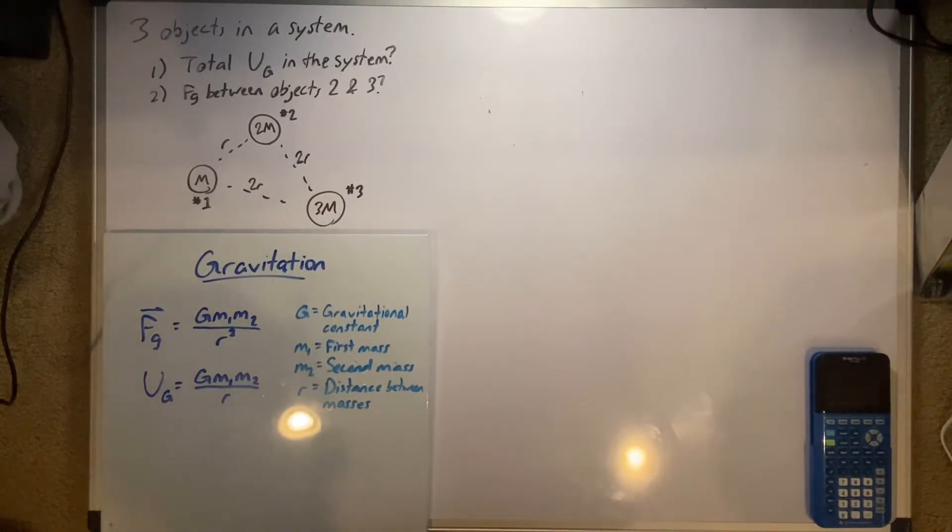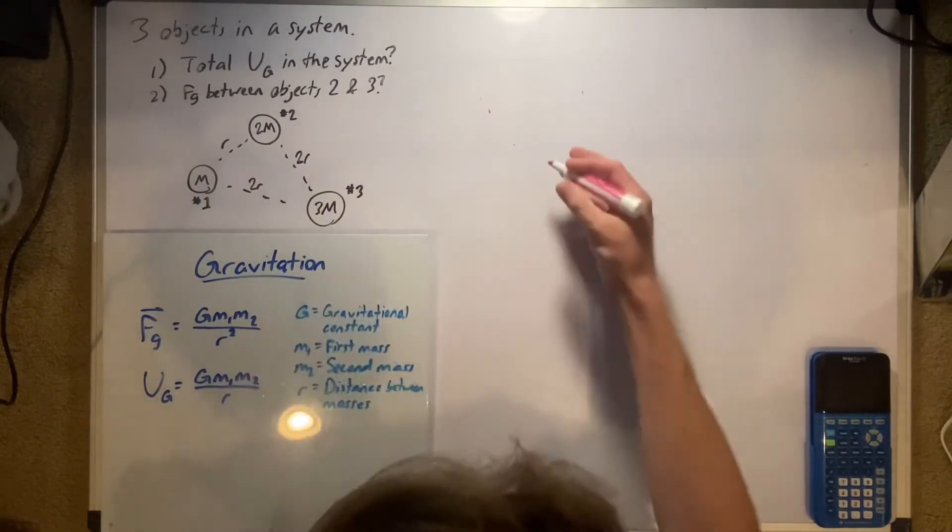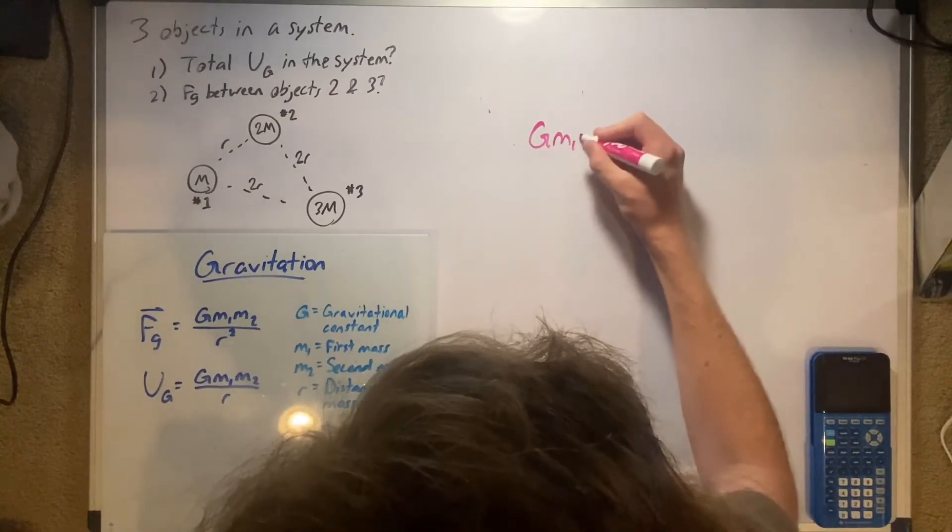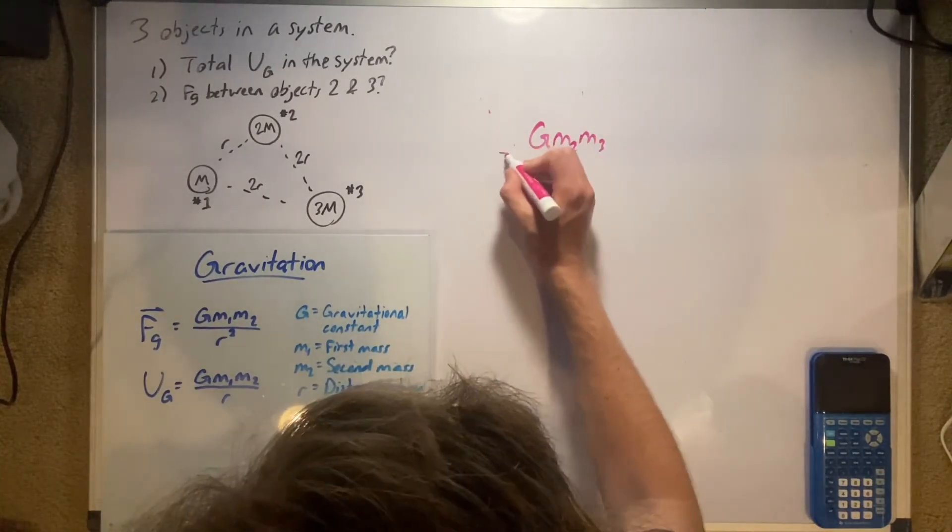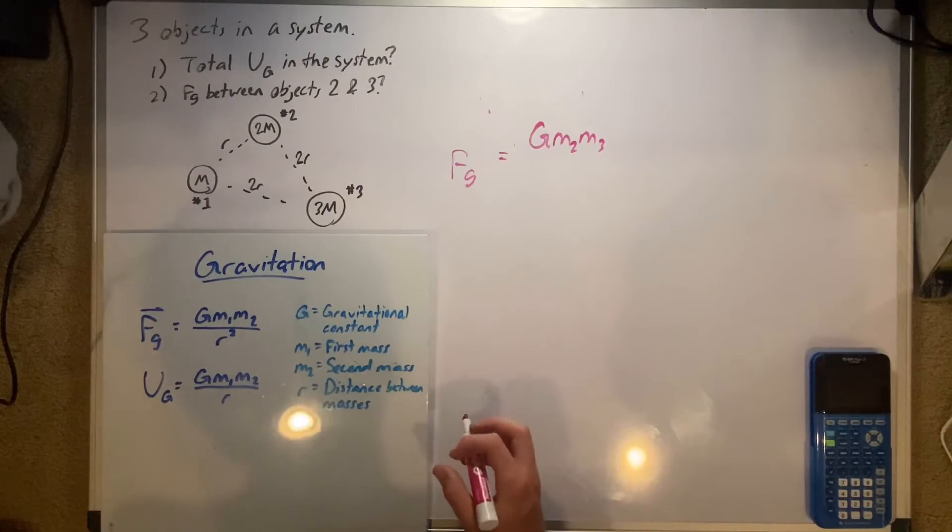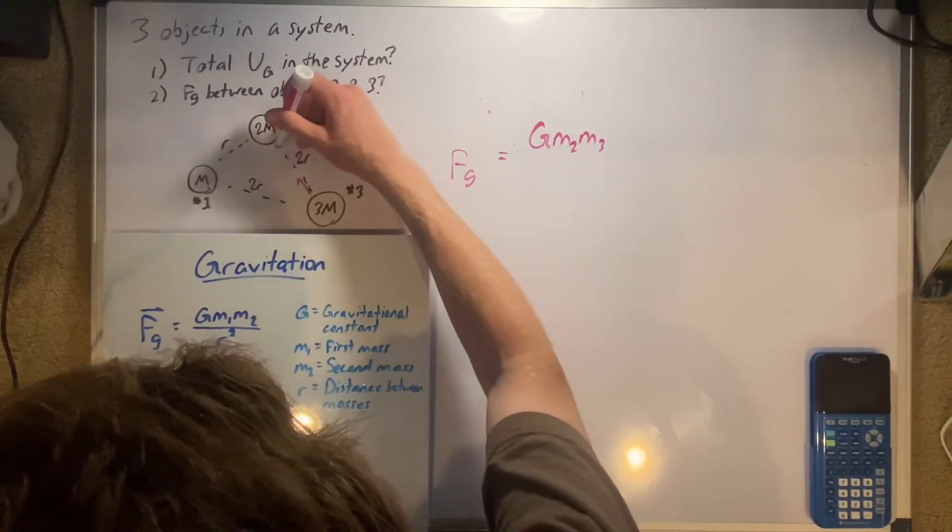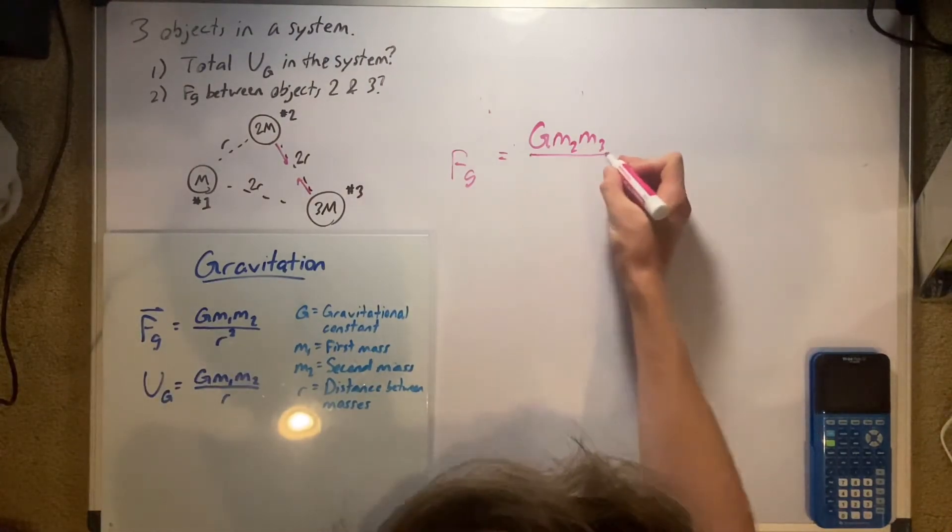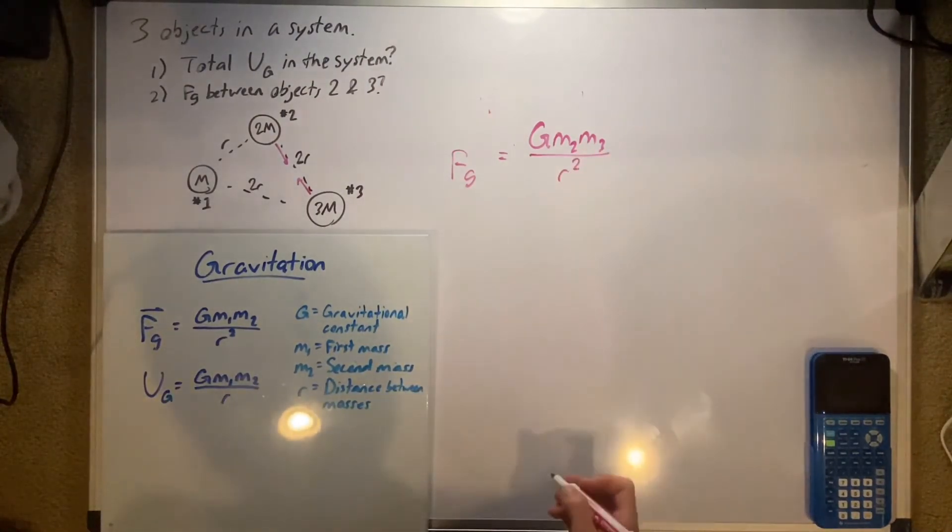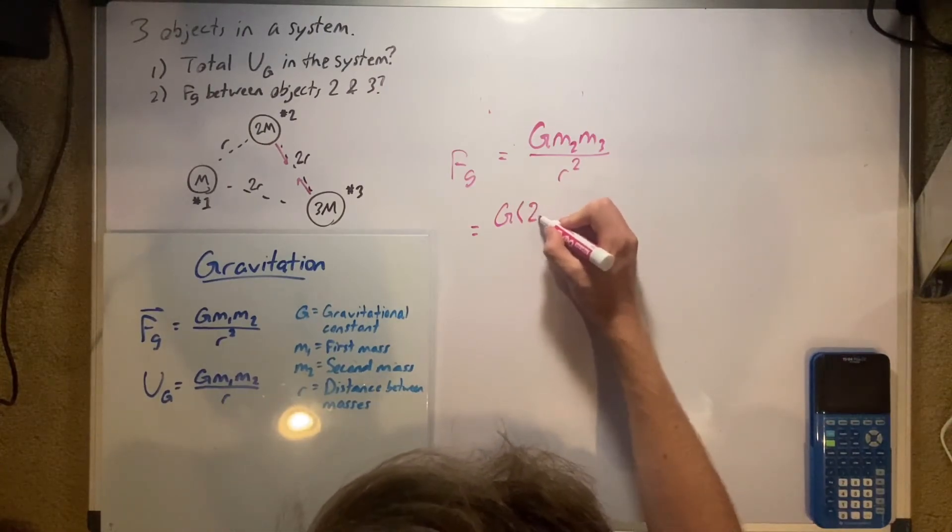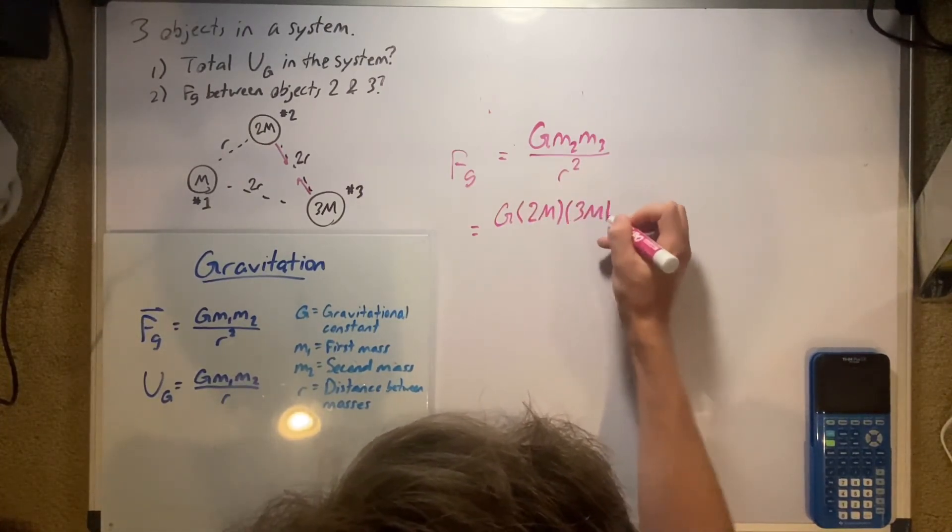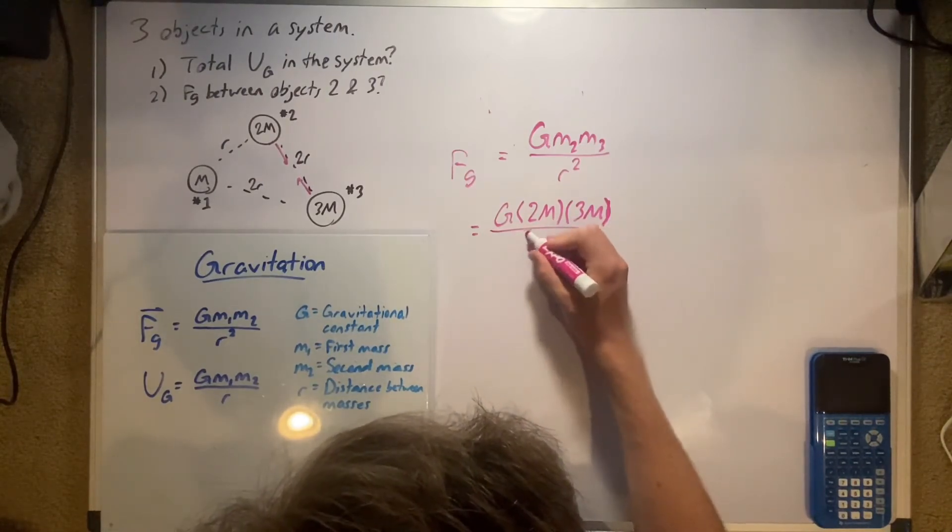Number two is the force of gravity between objects two and three. So we'll just plug it into that equation again. I'm going to use a different pen because I didn't like that one. So force of gravity between two and three, we're talking about two and three, so force of gravity is G M one M two. So we're going to do M two M three because those are the ones we're talking about is equal to force of gravity. I don't need to put that vector sign because obviously it's going to be just between two and three. It's going to be here and here. So all over the radius between those two squared.